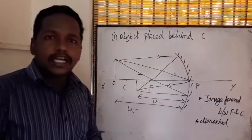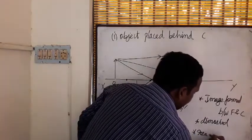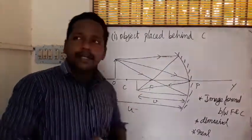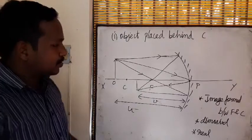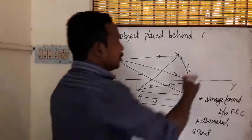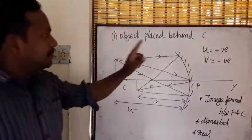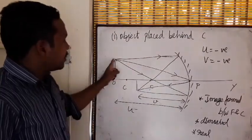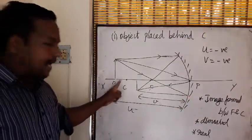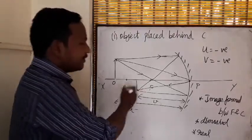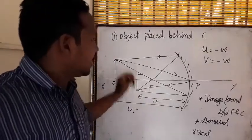To summarize Case 1: the parallel ray passes through F, the center ray reflects at the same angle, and the ray through focus reflects parallel. The image is formed between F and C — it is a real, inverted, and diminished image. Both u and v distances are negative since they are on the left side of the pole.